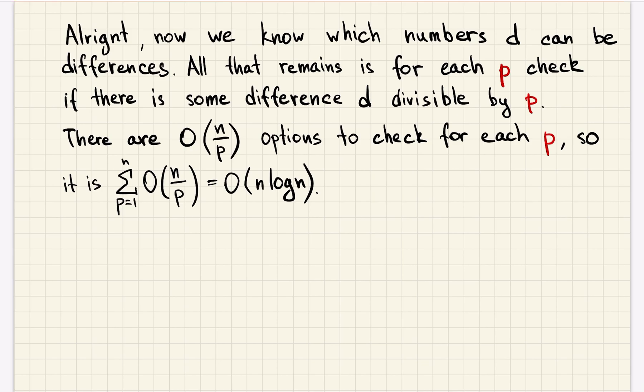For each p there is only n divided by p options to check. And as always when we want to do something for divisors, or vice versa, like here for each p we want to look at all the numbers that are divisible by it up to n.